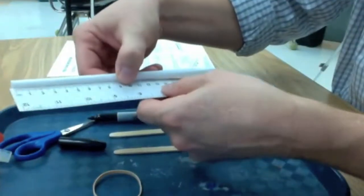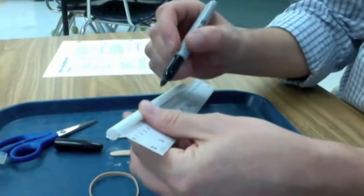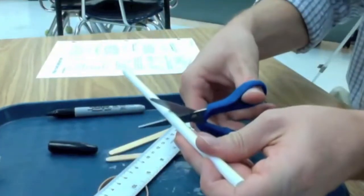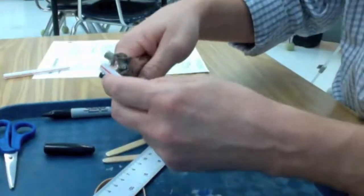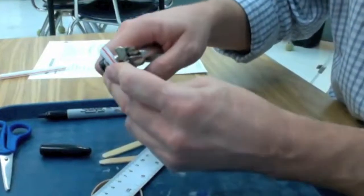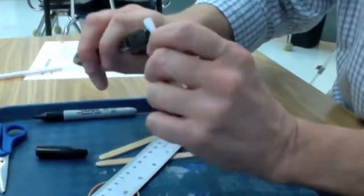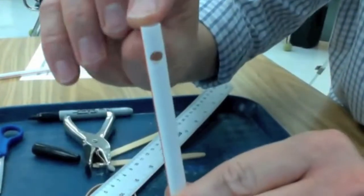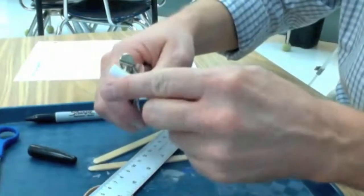Measure the jumbo straw and mark it, then cut it in half. Then use the hole puncher and punch a hole through the jumbo straw about a centimeter from the top. Do this on both ends.